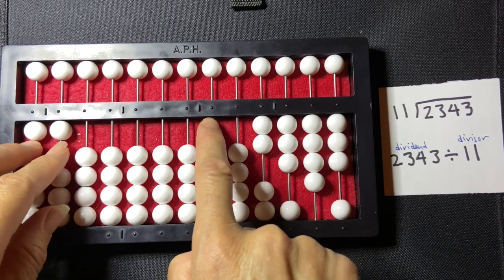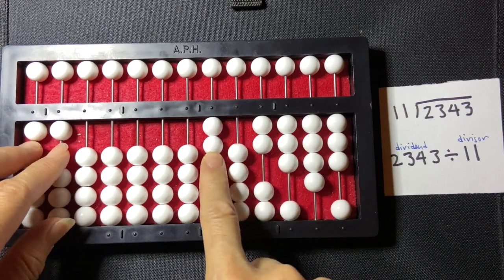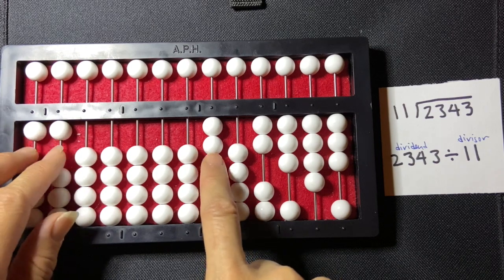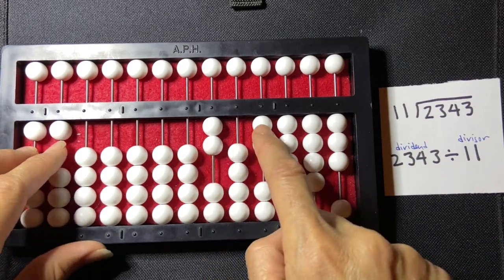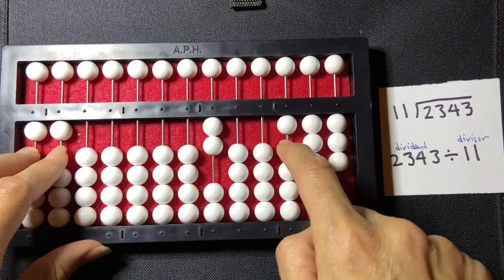So how many times does 11 go into 23? Well, I'm going to say 2. 2 times 11 is 22, and I'm going to subtract the 1, 2 of the 20 and the 1, 2 of the 2.